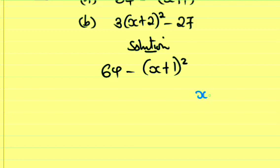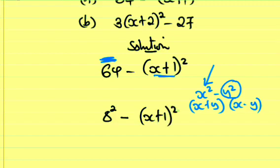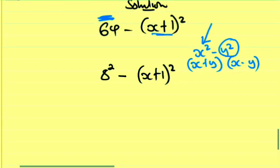This is a² minus b², which can be written as (a+b)(a-b). So we can apply the same here. 64 can be written as 8² minus (x+1)².